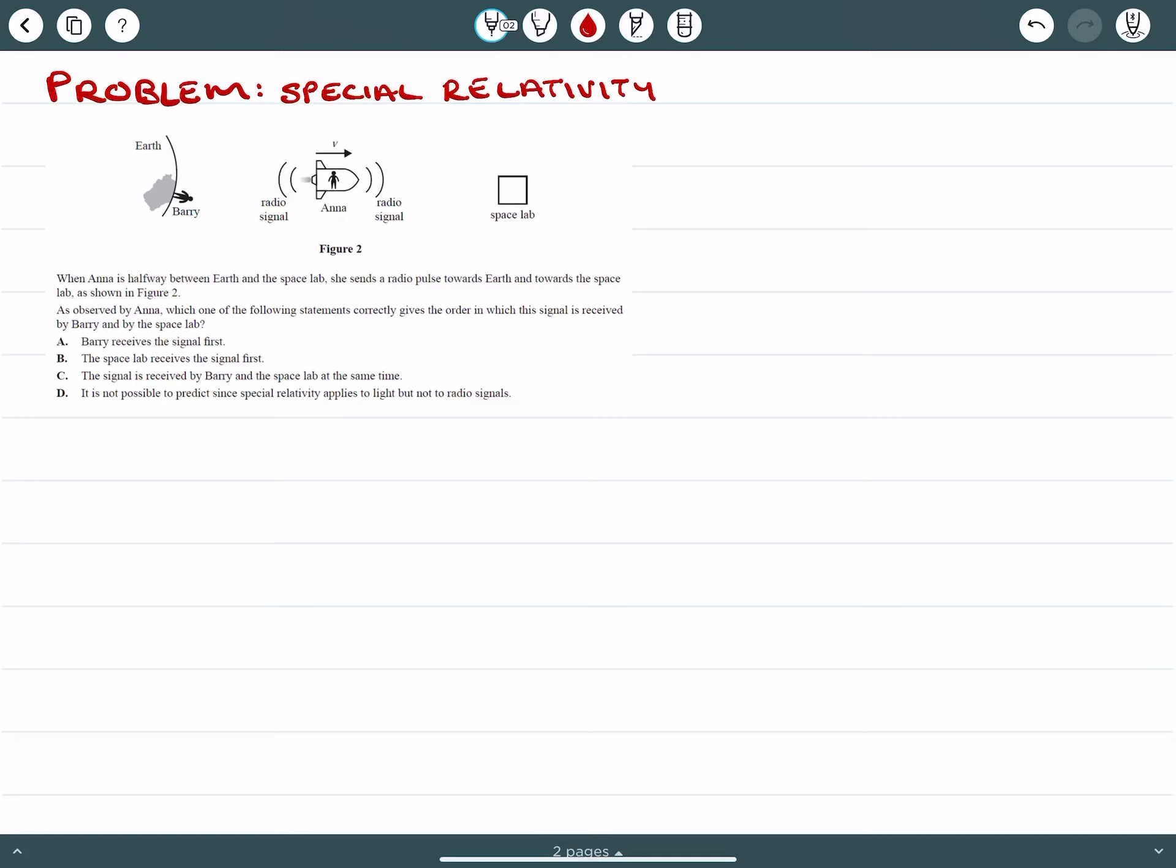So this question is quite peculiar because when we talk about radio pulses, this is actually the radio pulse velocity. Because it's part of the electromagnetic spectrum, it will be travelling at the speed of light.